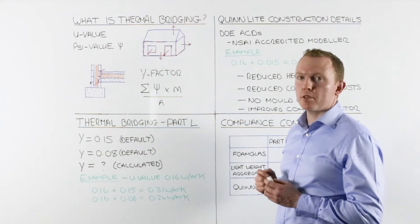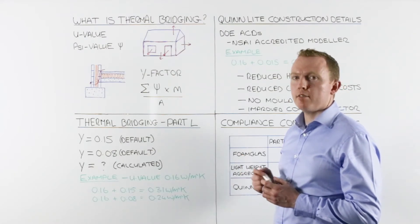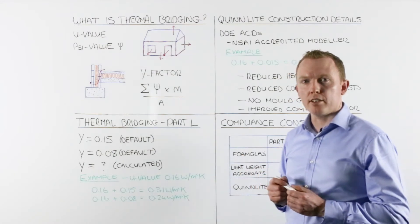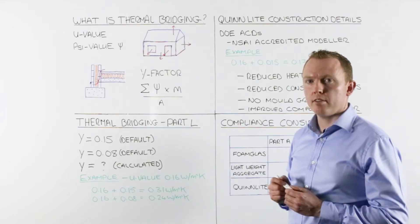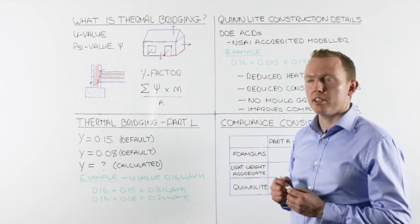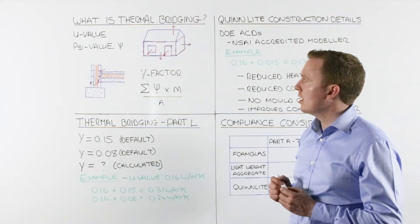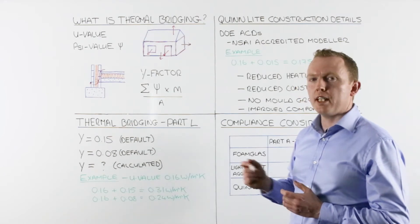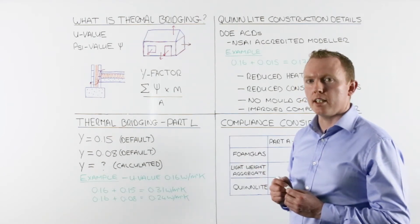Thermal bridging is measured in terms of ψ-values. A ψ-value is heat loss per linear meter of each junction, and it's calculated using computer modeling software.